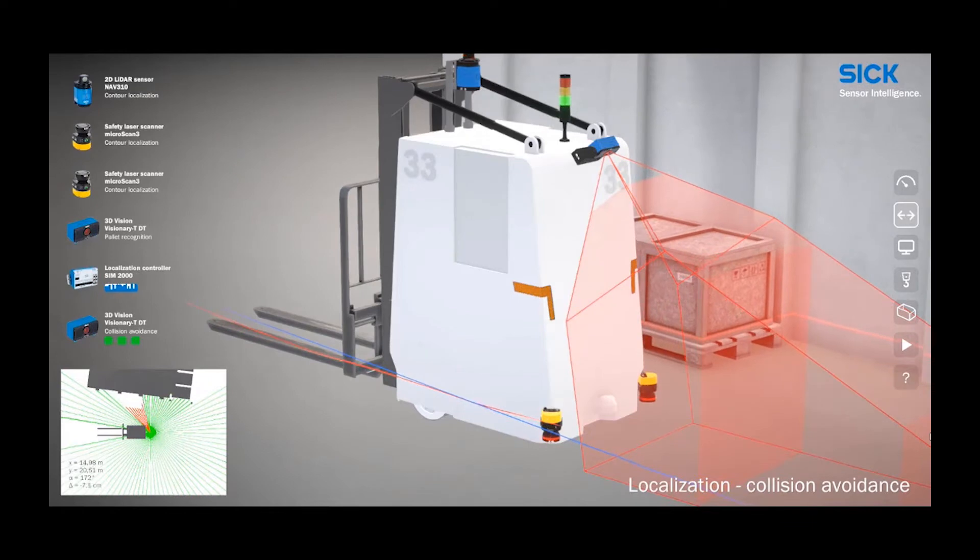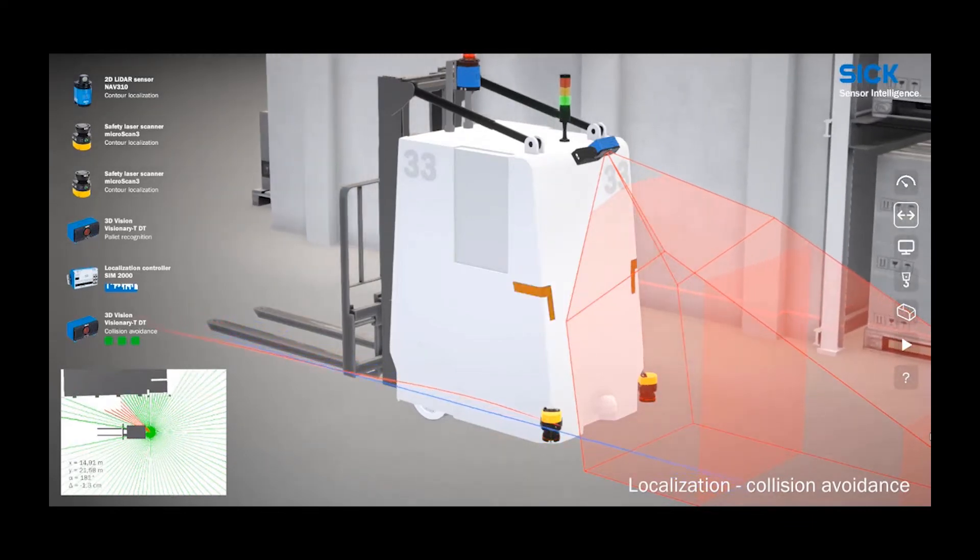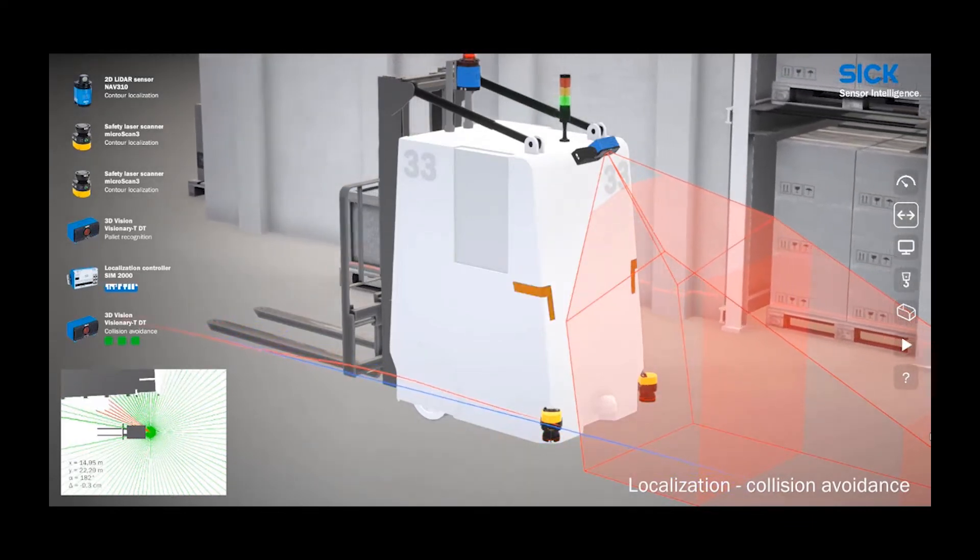This positional information is supplied to the AGV's navigation and control system and is a key component to any autonomous vehicle.